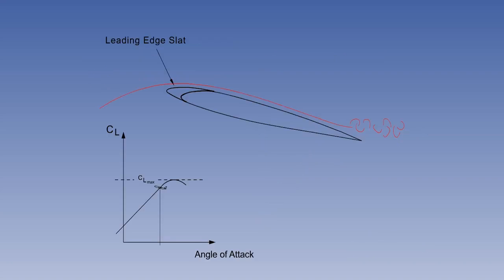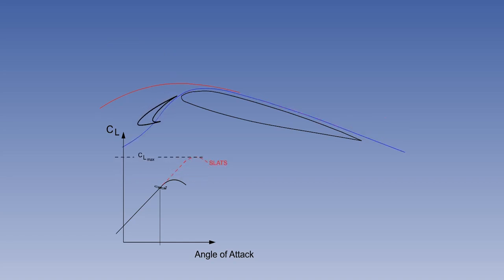Now we come to the most efficient leading-edge high-lift device, the slat. To illustrate the effect of slats, a wing is shown at a high angle of attack, with the airflow just starting to separate at the trailing edge. The aircraft is positioned on the lift curve. As the slats are driven open, high-energy air from under the leading edge flows onto the top surface of the wing. This increases the kinetic energy in the boundary layer, which in this example reattaches the airflow.